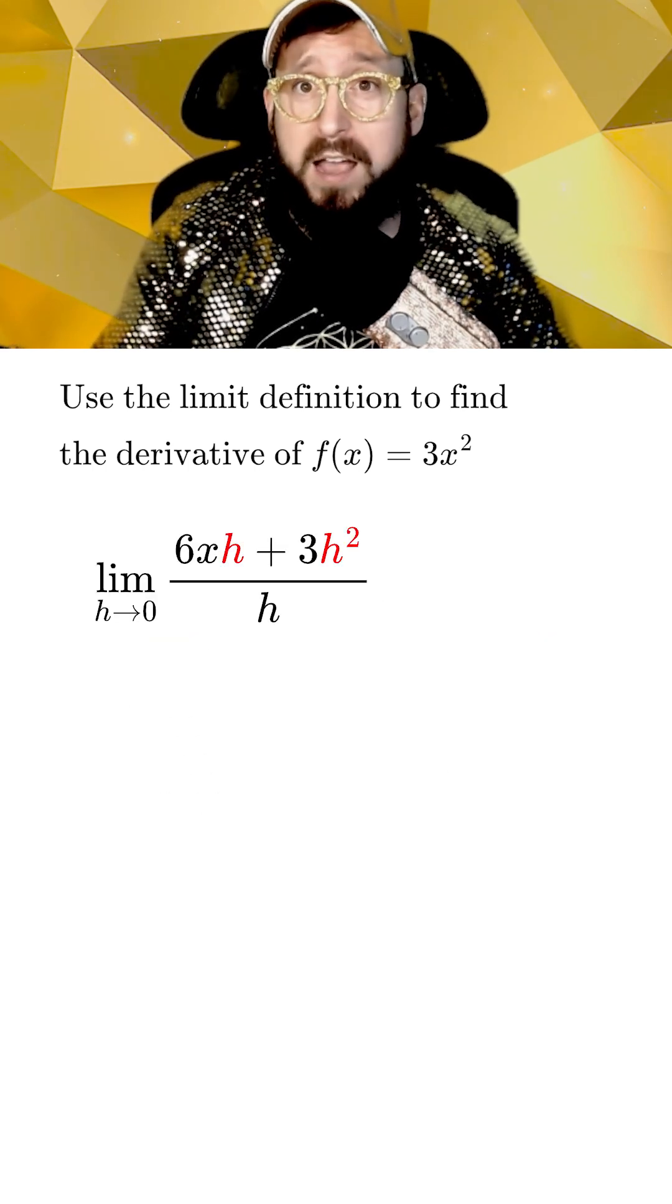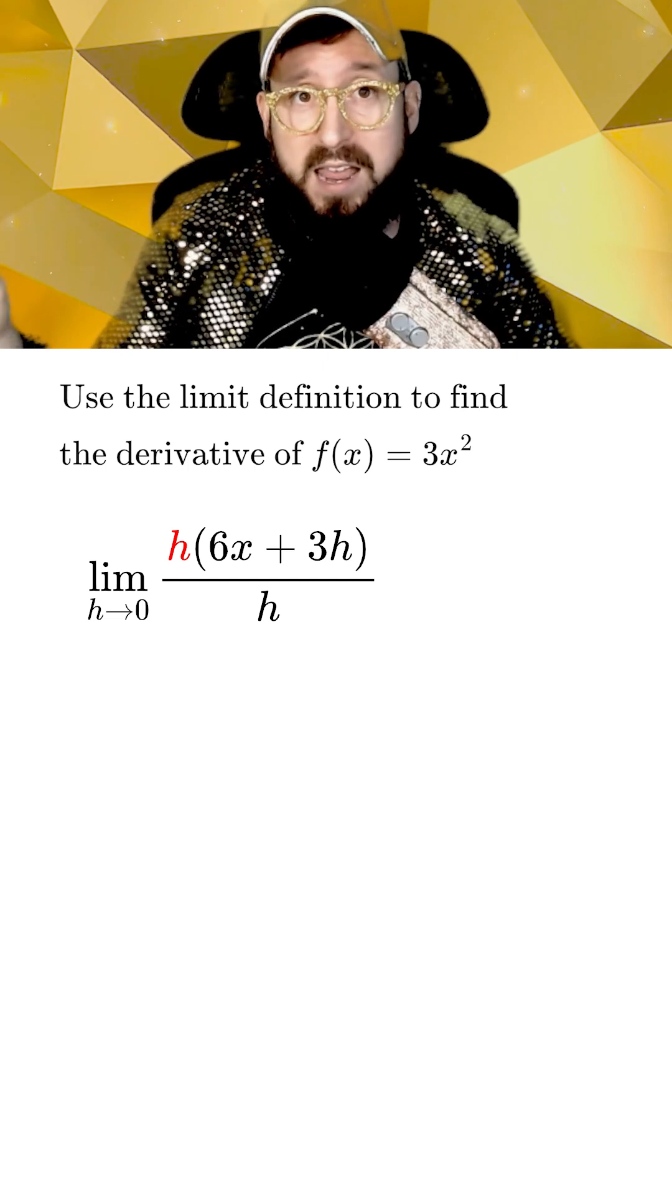At this point, we can also factor out an h from every term on the top, which will end up canceling with the h in the denominator.